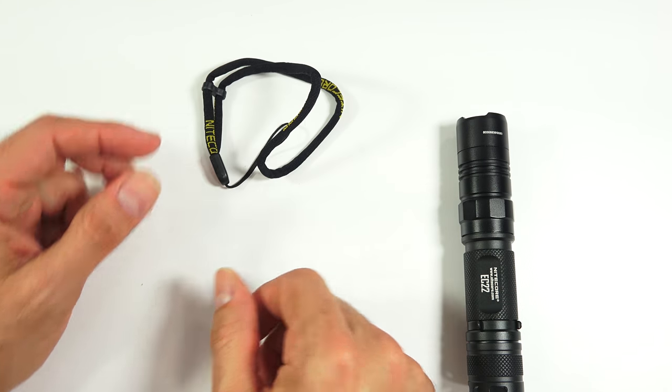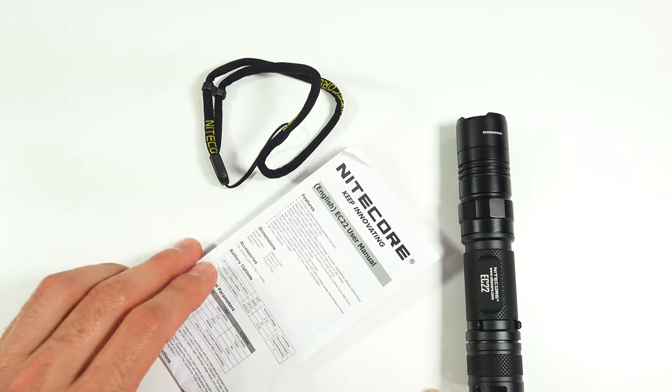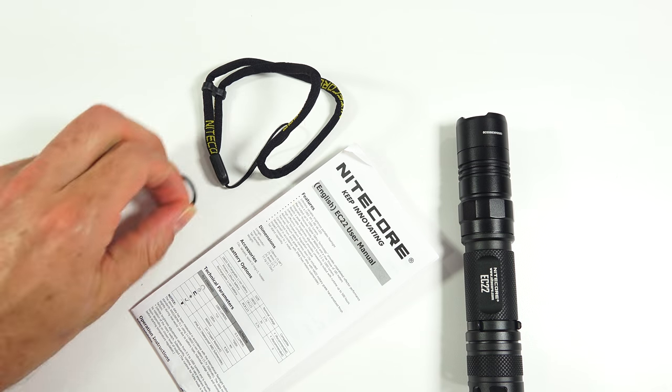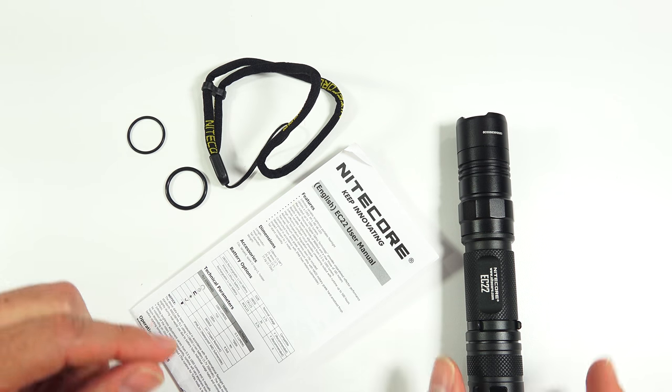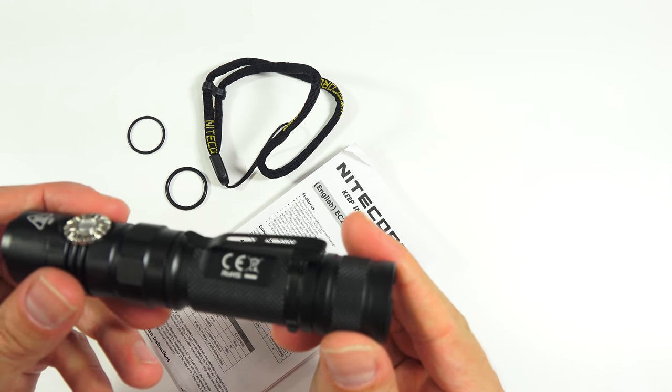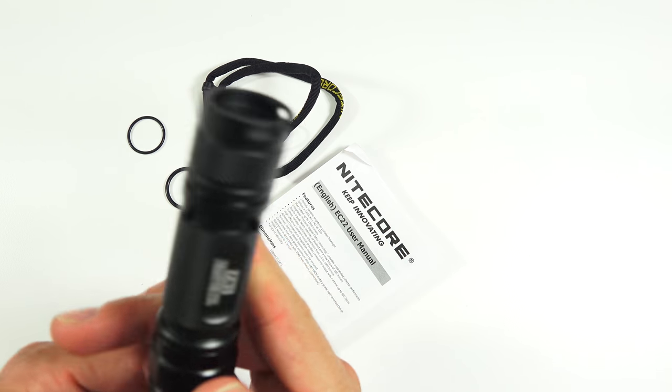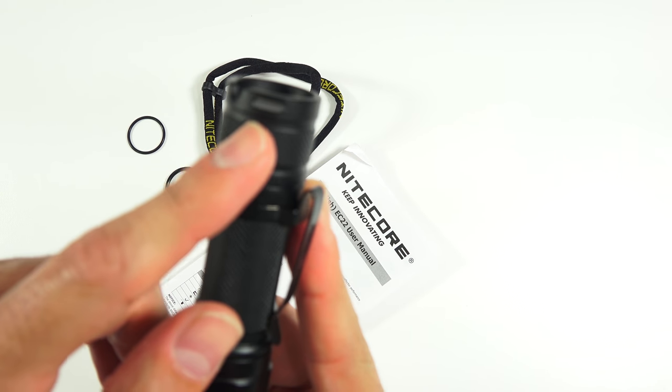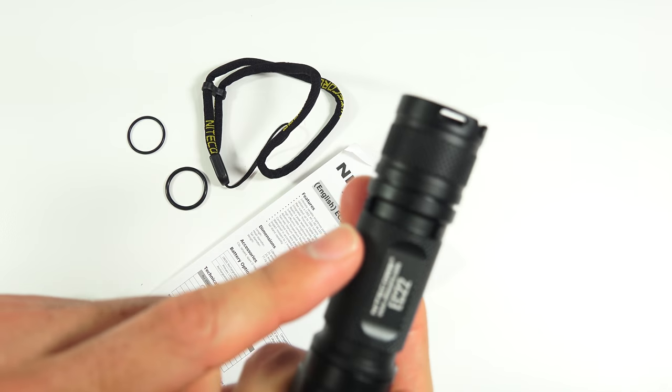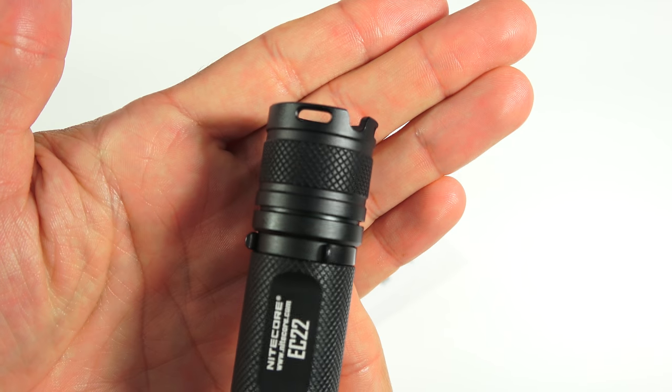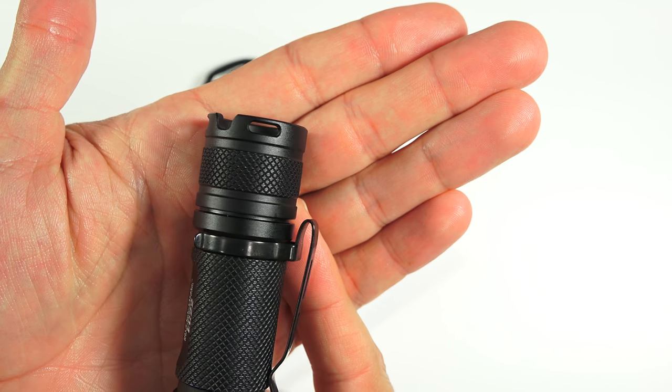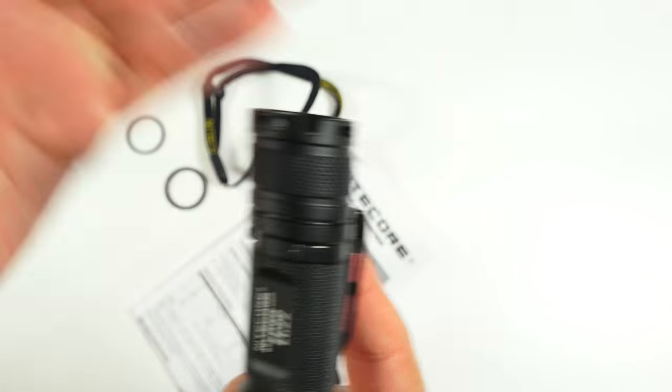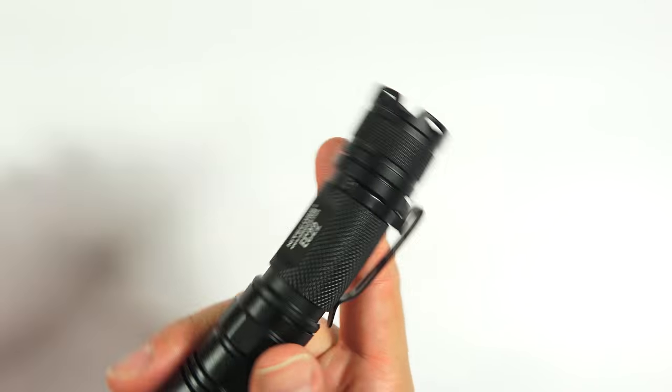Stuff that comes with it, it comes with a lanyard, an instruction manual, two spare o-rings, and the pocket clip, which doesn't come on the light, but you can put it on there. The lanyard goes in the holes back here. And those are almost big enough that you could probably fit some thin paracord through there if you wanted.